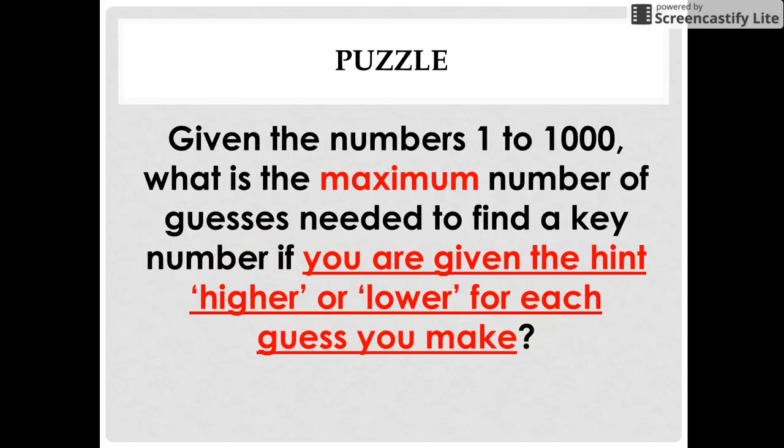Suppose your friend assumes a random number between 1 to 1000. This random number is called the key number. What is the maximum number of guesses needed by you to find that key number if the only hint given to you is higher or lower for each guess that you make?